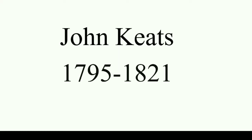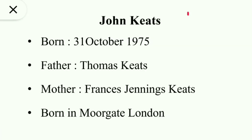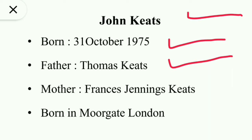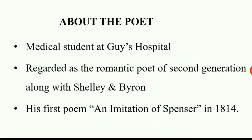Hello, my dear friends. Today we are going to discuss the extremely important early romantic poet John Keats. John Keats was born on 31st October 1795. His father's name was Thomas Keats and his mother was Frances Jennings Keats. He was born in Moorgate, London. John Keats was a medical student at Guy's Hospital.